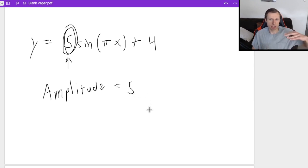And remember what that means, it means it's going five up and five below the center line, which this time the center line is at four. And that's because there's a vertical shift plus four. As a matter of fact, if you wanted to graph this...